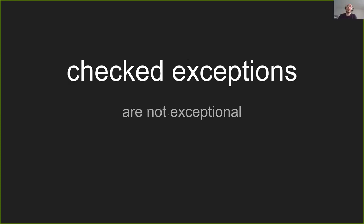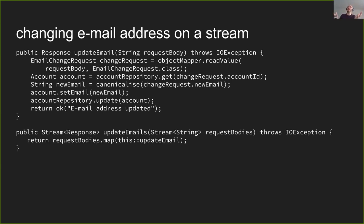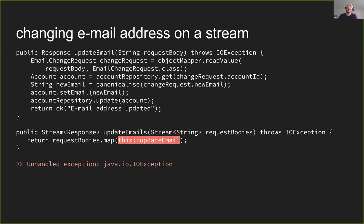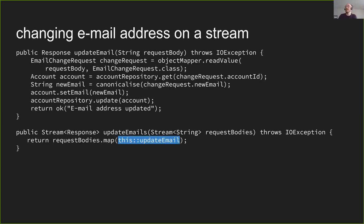There are checked exceptions, which are kind of not exceptional because they say this is something we will definitely handle. But checked exceptions make Java 8 very unhappy. If we were to try to update a whole stream of request bodies instead of just one, and we have our update single method throw an IOException, we'd get an unhandled exception thing even with the throws IOException annotation. That means we basically can't use that approach with streams - we would have to catch it in the method. There is an approach to handle this using results, and we'll talk about that later.